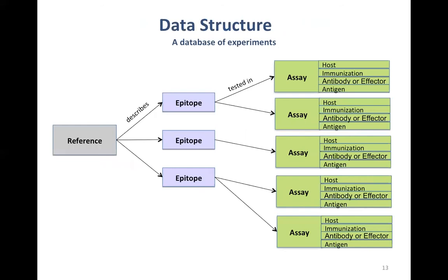The IEDB is a database of experiments. We start with a reference publication — to be relevant, it should have at least one epitope described in at least one experiment. We capture all experiments from the paper for all epitopes in it. The result is that we have assays from many publications put together in a structured format, with separate fields describing how the experiment was performed and how the epitope was discovered and proven. To capture all these database fields, we structure our data using a formal ontology.